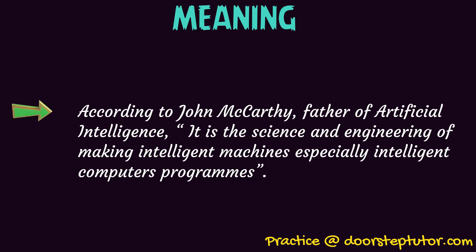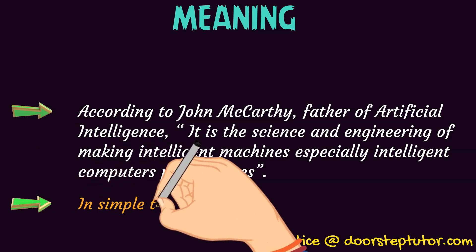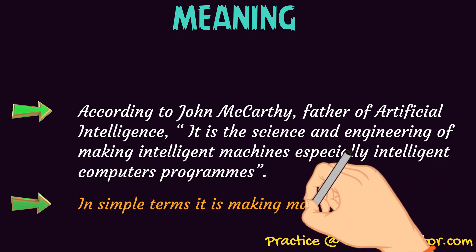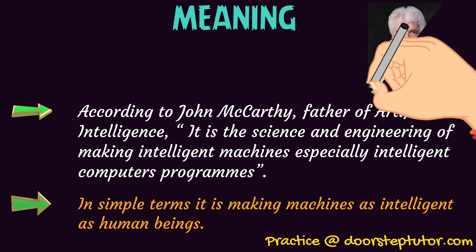When a human being has intelligence it is called natural intelligence or human intelligence, but when a machine has any kind of intelligence it is simply called artificial intelligence. We all know about Sophia the robot, who has an intelligence of her own. In simple terms, AI is about making machines as intelligent as human beings.